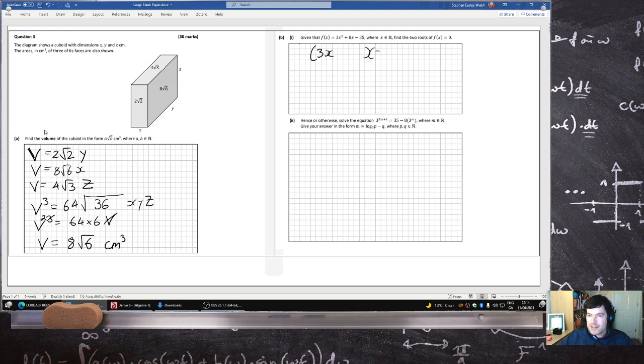3x², x, 35... 5 and 7. Kind of has to be 5 and 7, doesn't it? 5, 7, 21 and 5.